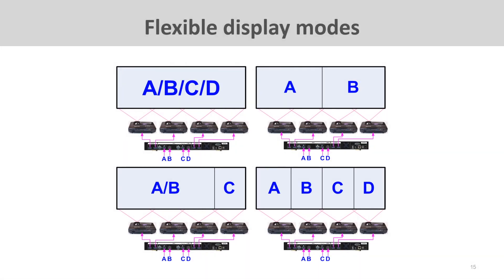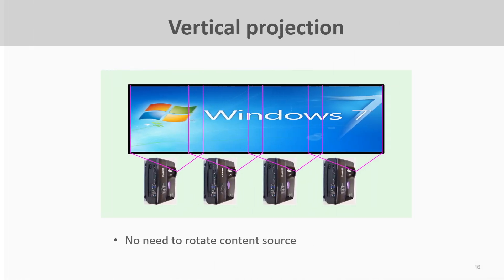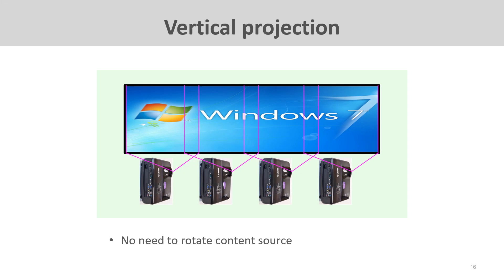Another advantage: if the video wall controller is embedded with a matrix function, you can use it to create different display modes — switching among multiple sources to multiple displays. For example, you can display different contents on the full screen, show one content on two projectors and another content on the other two, or display four discrete contents on four projectors. For projectors needing to project in portrait mode, the controller can crop and rotate the image easily without modifying the source content.